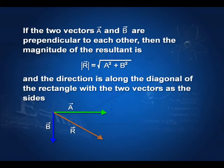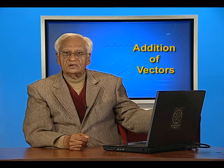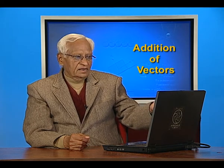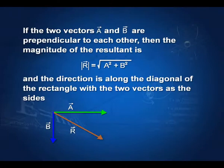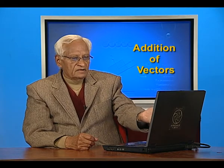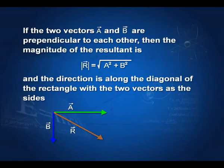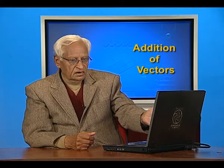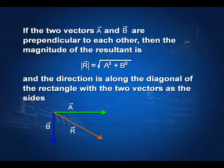If the two vectors A and B are perpendicular, then simple geometry shows that the magnitude of the resultant is the square root of A squared plus B squared, where A and B are the magnitudes of vectors A and B. The direction is along the diagonal of the rectangle formed with the two vectors as sides.